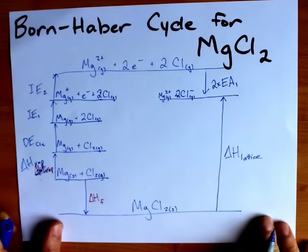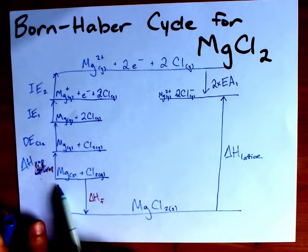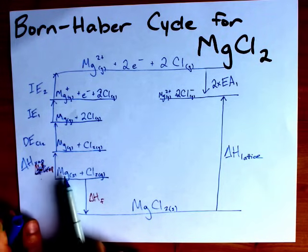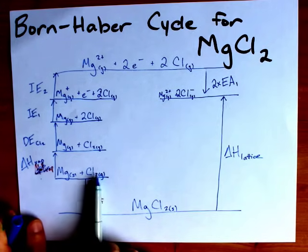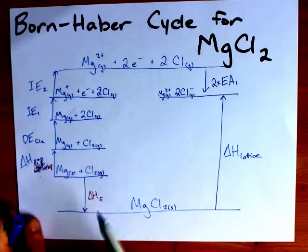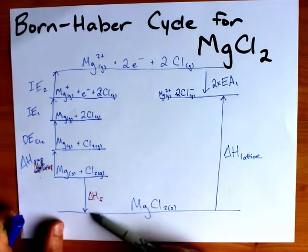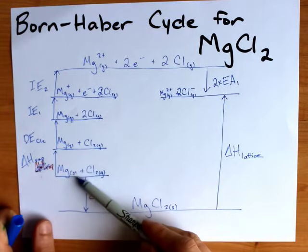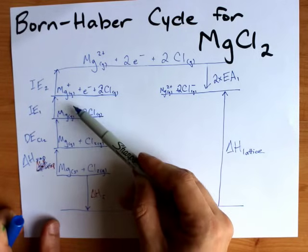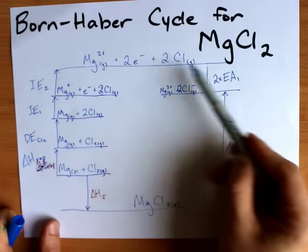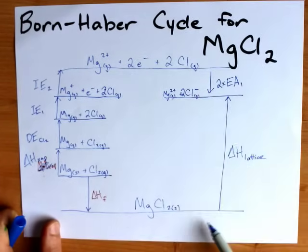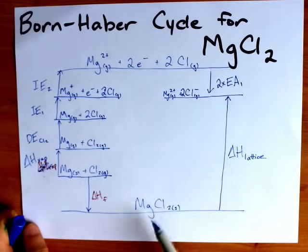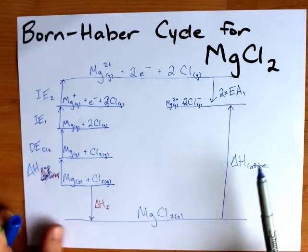But this is the Born-Haber cycle. It shows you converting solid magnesium and gaseous chlorine into magnesium chloride by both a direct formation and also vaporizations, ionizations, electron affinities, and lattice enthalpies. You can use any of these numbers to calculate any of the other numbers.